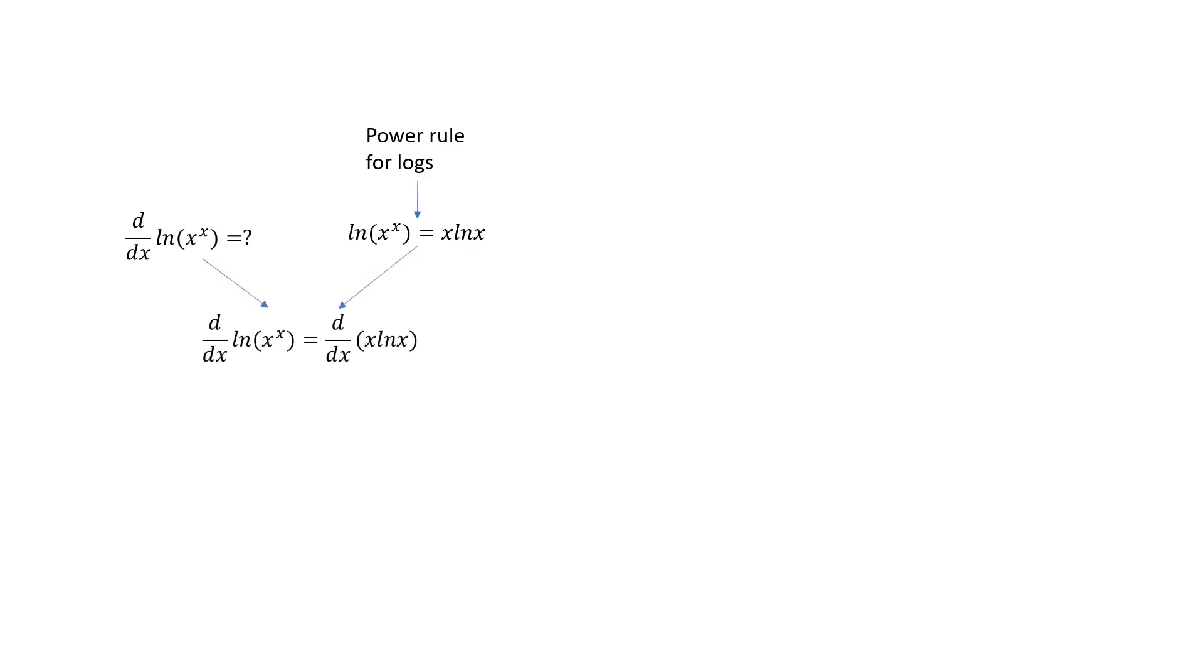On the right-hand side, we have a product of functions, so we use the product rule for derivatives. This rule performs the derivative as the sum of products. The derivative of ln x is 1 over x, and dx by dx is 1. And we tidy up a bit.